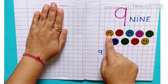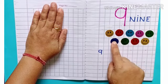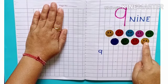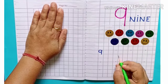Let us count: one, two, three, four, five, six, seven, eight, and nine. Now we will learn how to make nine.